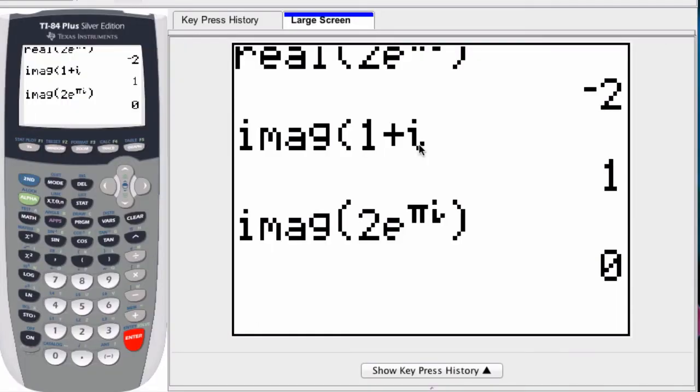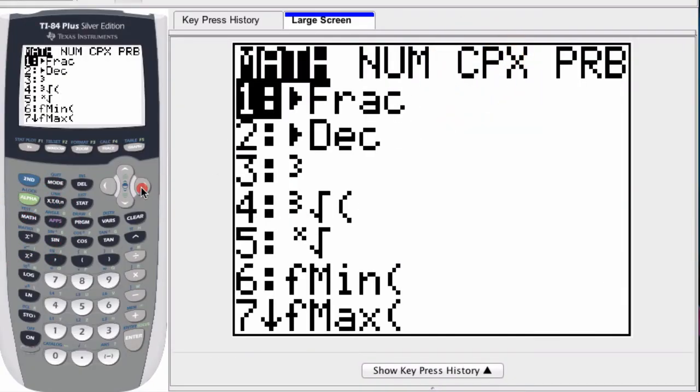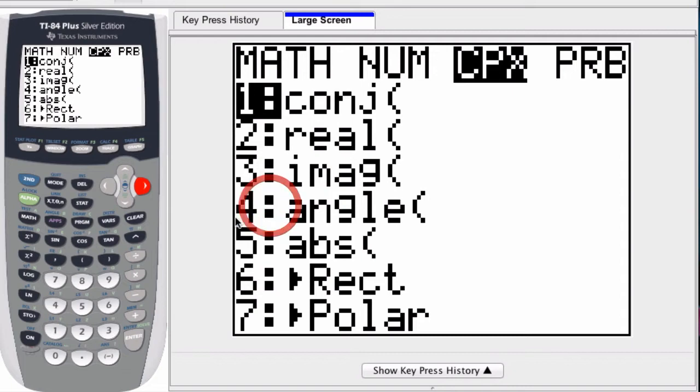The graphing calculator can isolate the angle of a polar complex number. If we press math, scroll over to complex commands, you'll see that the fourth one is angle.